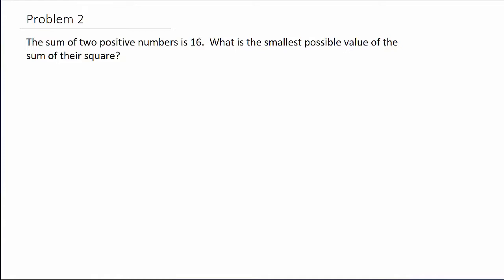Alright, so let's see. It says the sum of two positive numbers is 16. What is the smallest possible value of the sum of their squares? Alright, so let's write down all the information they give us and what we want to either maximize or minimize.